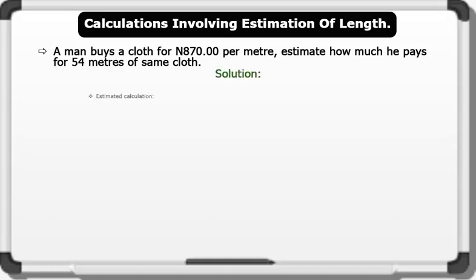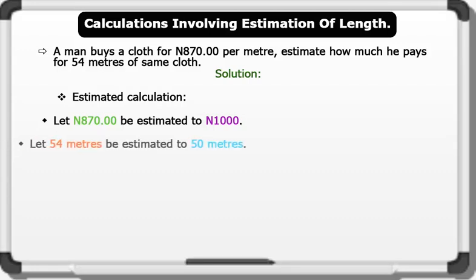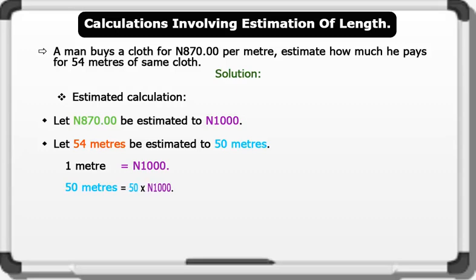Solution. Following the general rule of estimation, let 870 naira be estimated to 1000 naira. Let 54 meters be estimated to 50 meters. Therefore, if 1 meter equals 1000 naira, then 50 meters equals 50 times 1000. This gives us an estimated value of 50,000 naira.